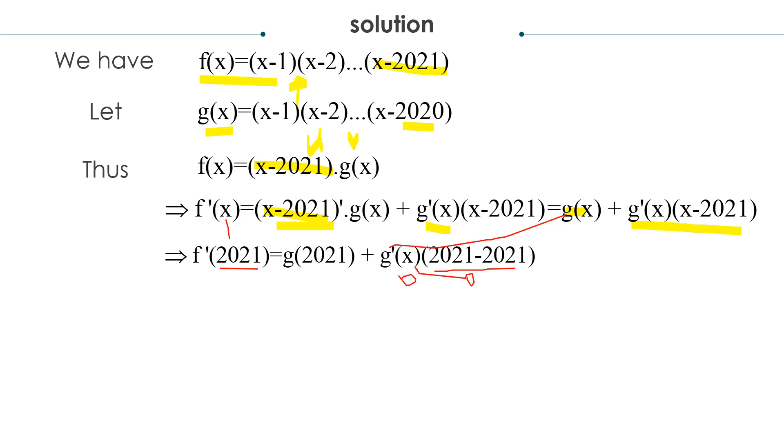The only thing left is g(2021). Since I know that g(x) equals that, when I substitute x equals 2021 into the expression, I got 2021 minus 1.